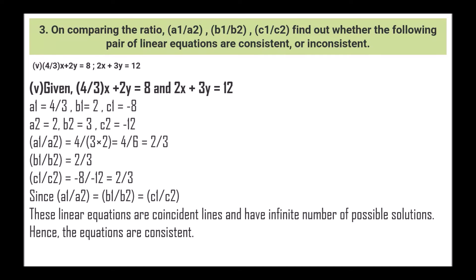Next: (4/3)x + 2y = 8 and 2x + 3y = 12. So a1 = 4/3, b1 = 2, c1 = -8, a2 = 2, b2 = 3, c2 = -12. a1/a2 = (4/3)/2 = 4/6 = 2/3, b1/b2 = 2/3, and c1/c2 = -8/-12 = 2/3. Since a1/a2 = b1/b2 = c1/c2, these linear equations are coincident lines and have infinite numbers of possible solutions. Hence the equations are coincident.